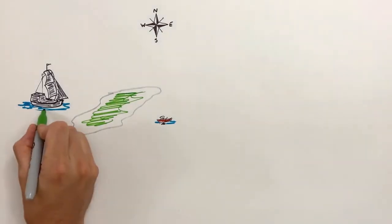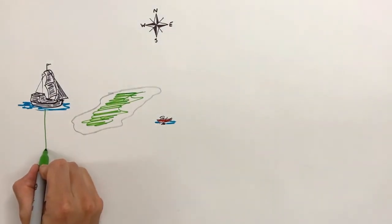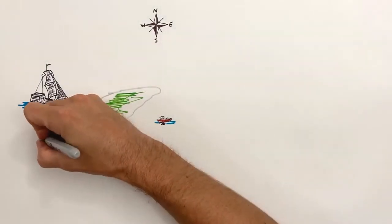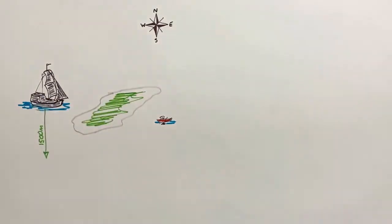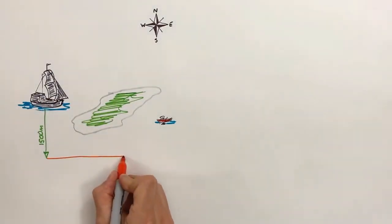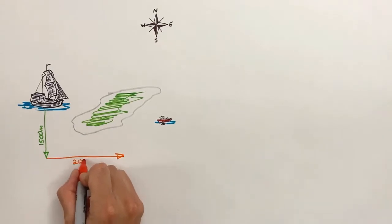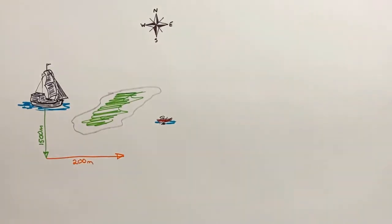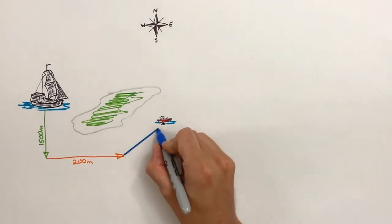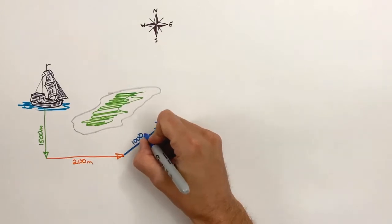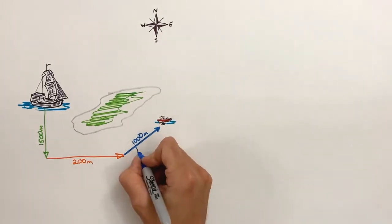First, the ship is going to sail due south, a total displacement of 1,500 meters. Then the ship is going to turn and sail east, a total of 2,000 meters. Lastly, the ship is going to sail 1,000 meters in a direction that is 35 degrees north of east.